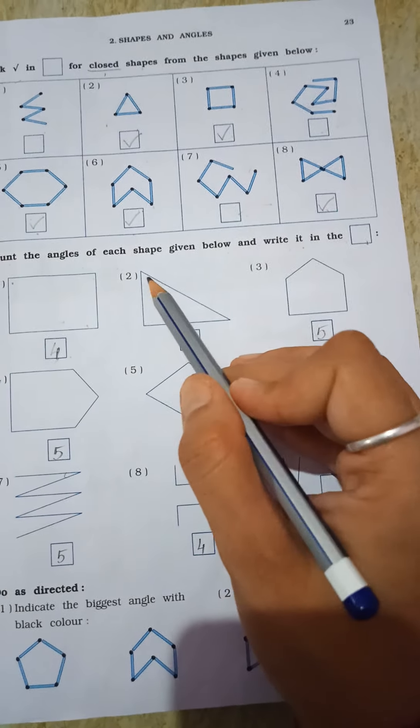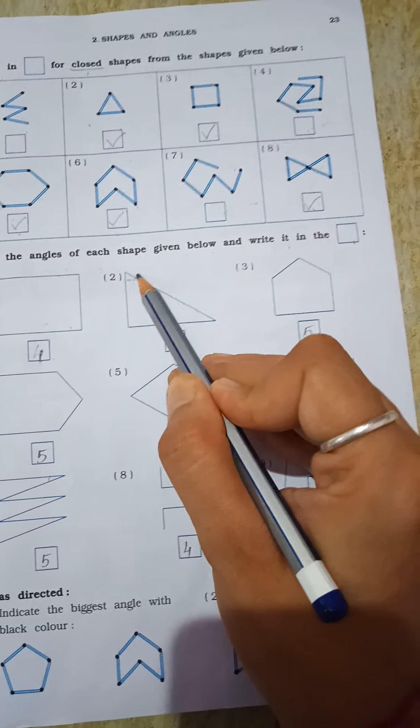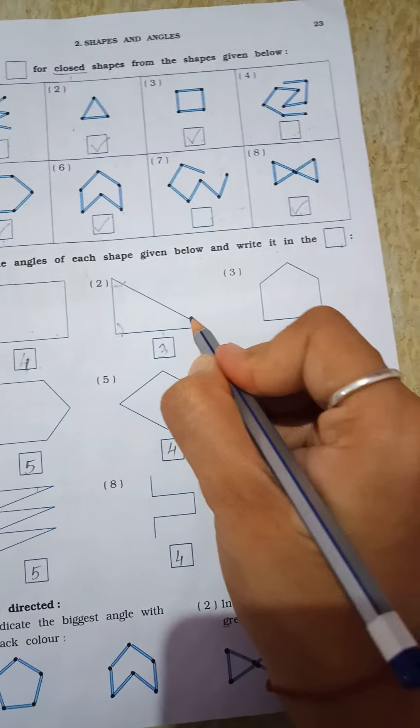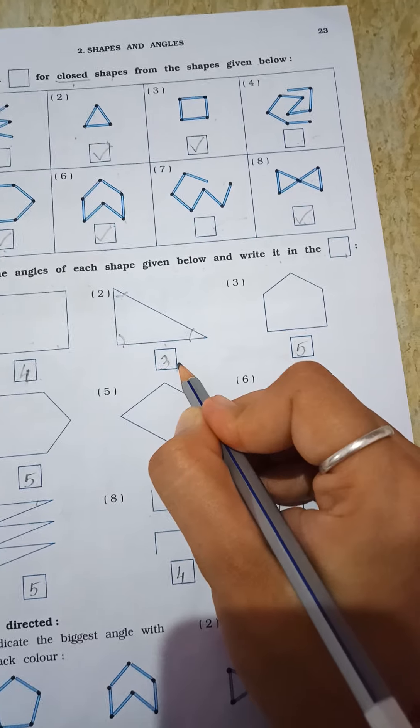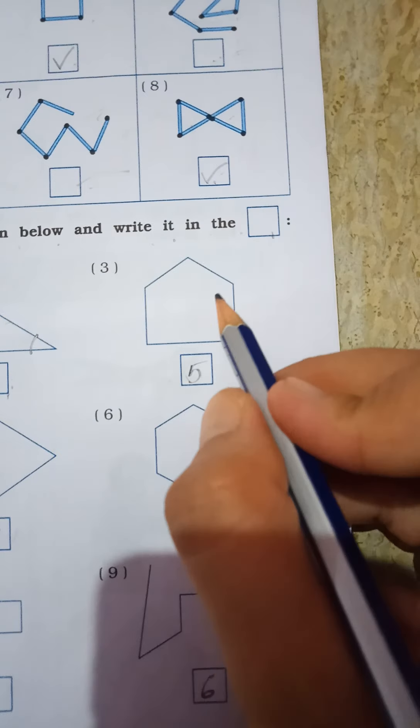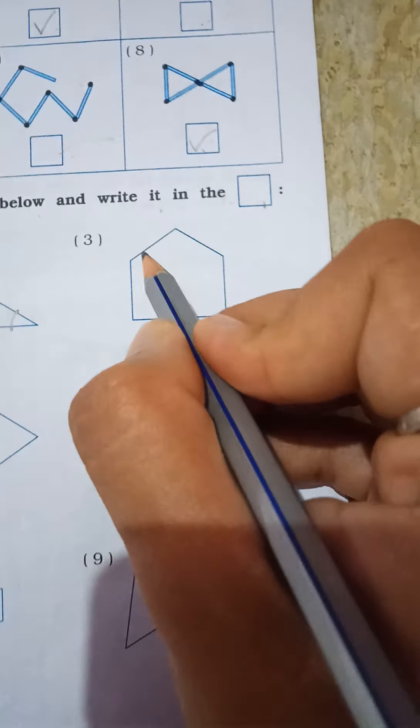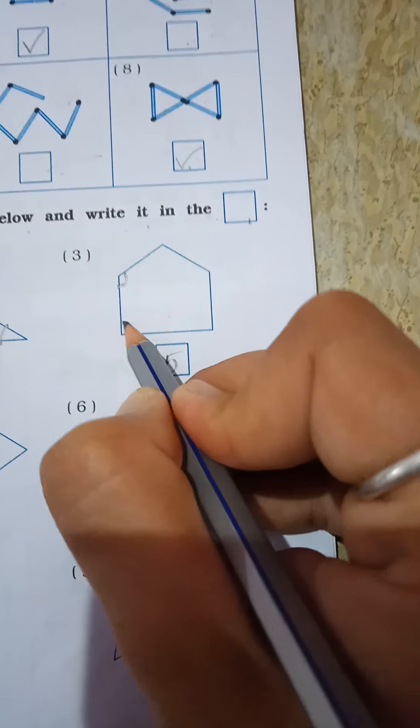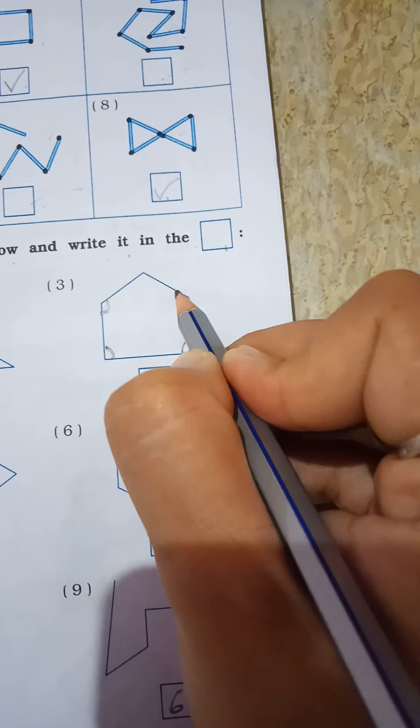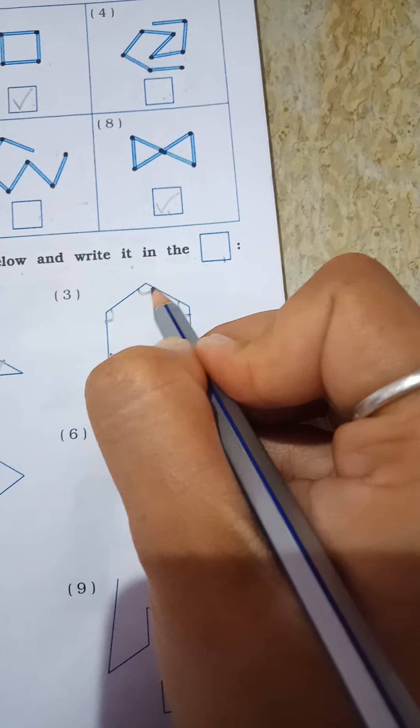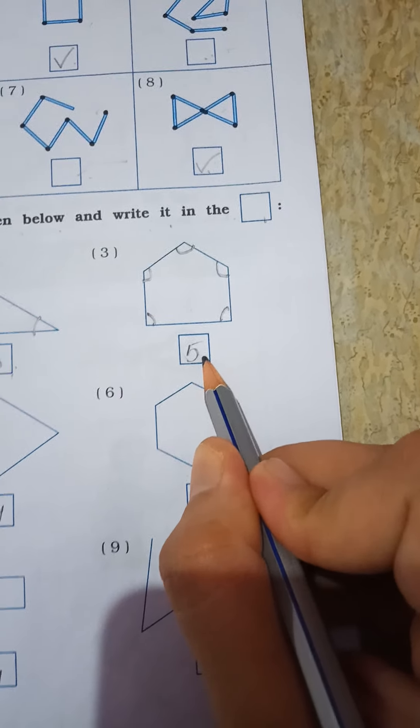This is triangle. Triangle maan ketla angles bane? One, two and three. So you have to write here three. See the third number. Aapne padda chai? This is pentagon. Pentagon maan ketla angles bane? One, two, three, four and five. So see, this is five angle we got.